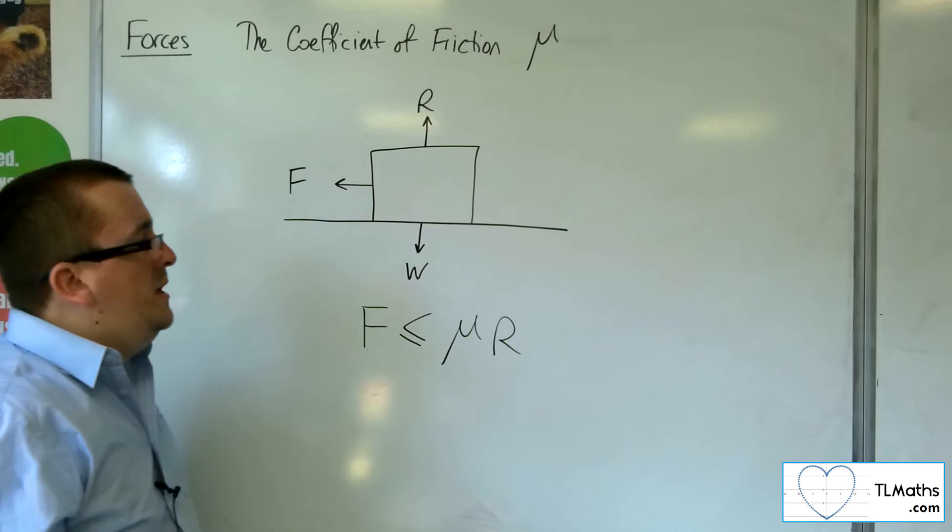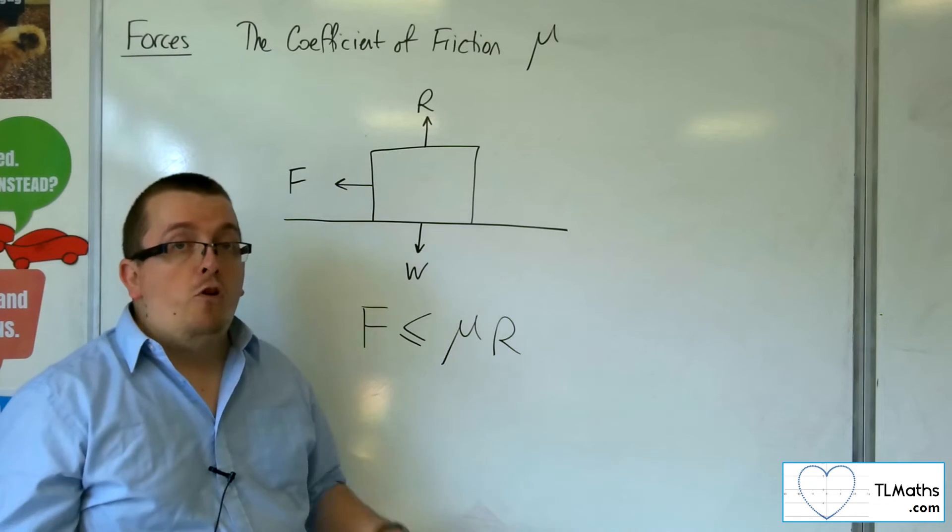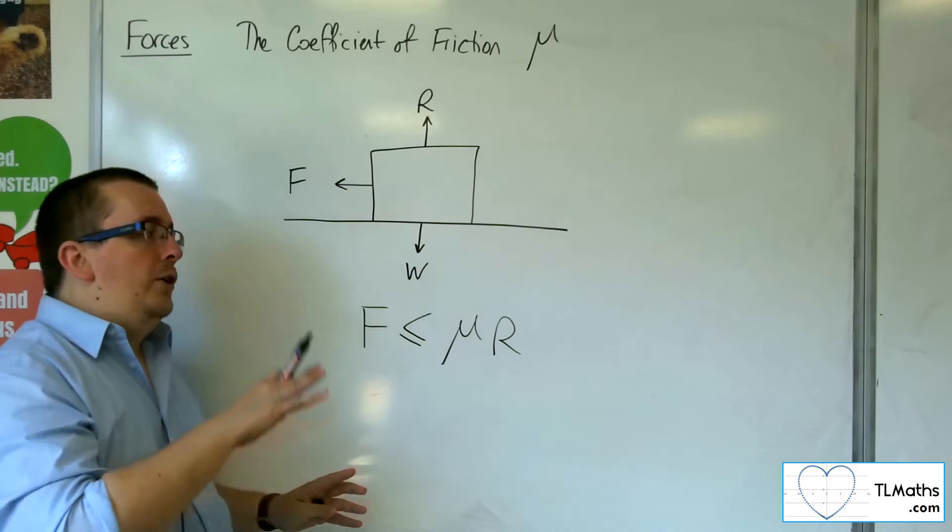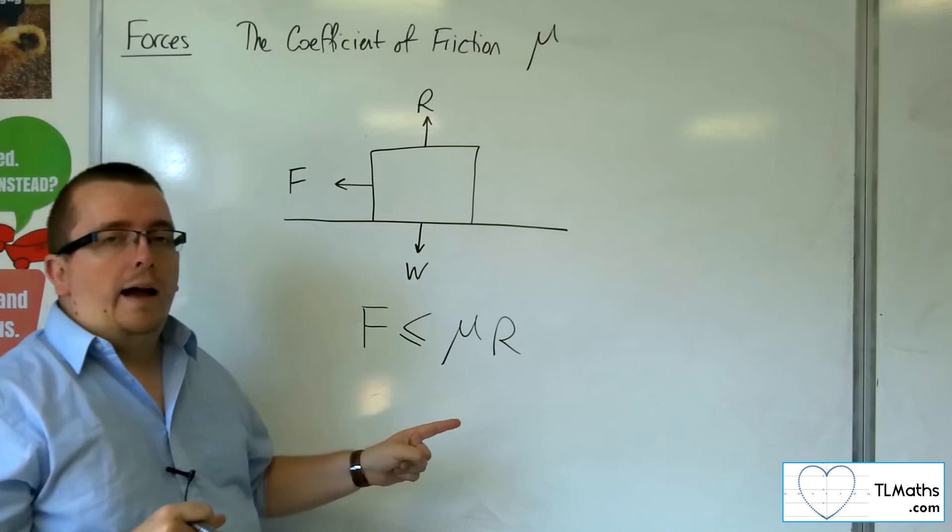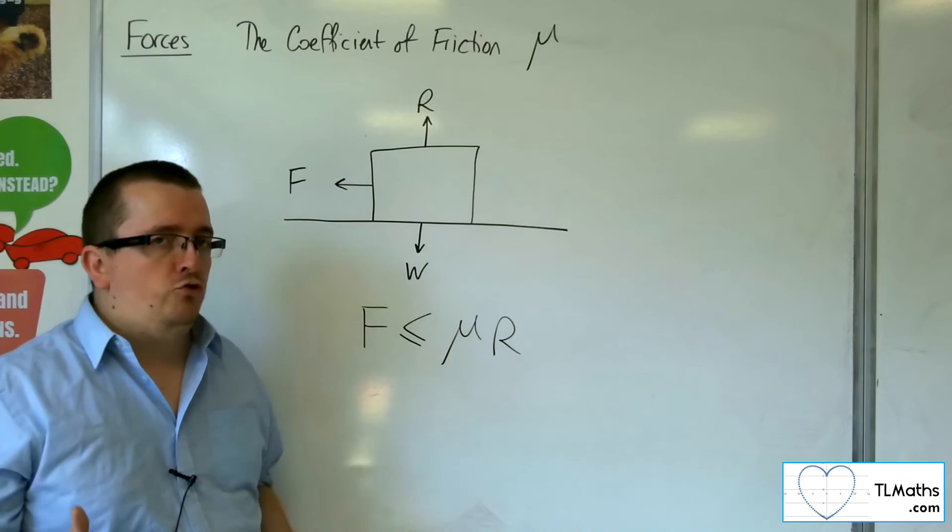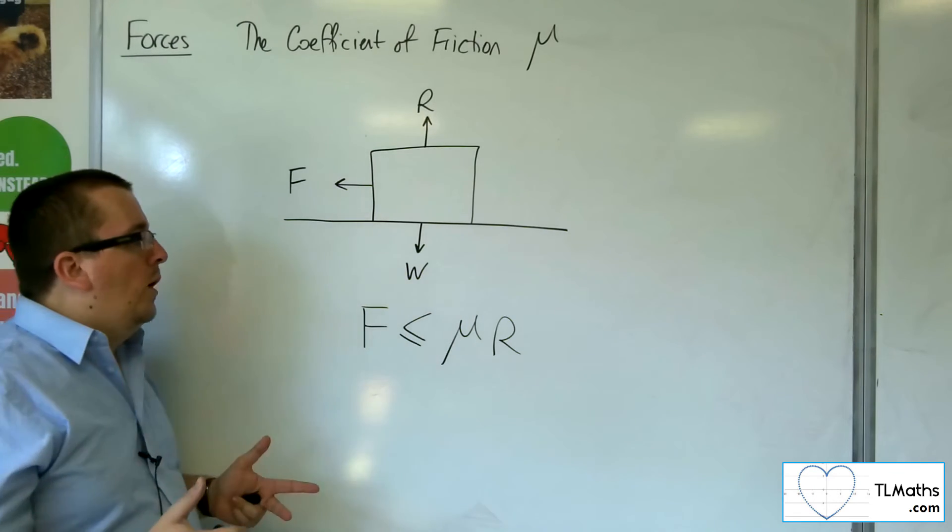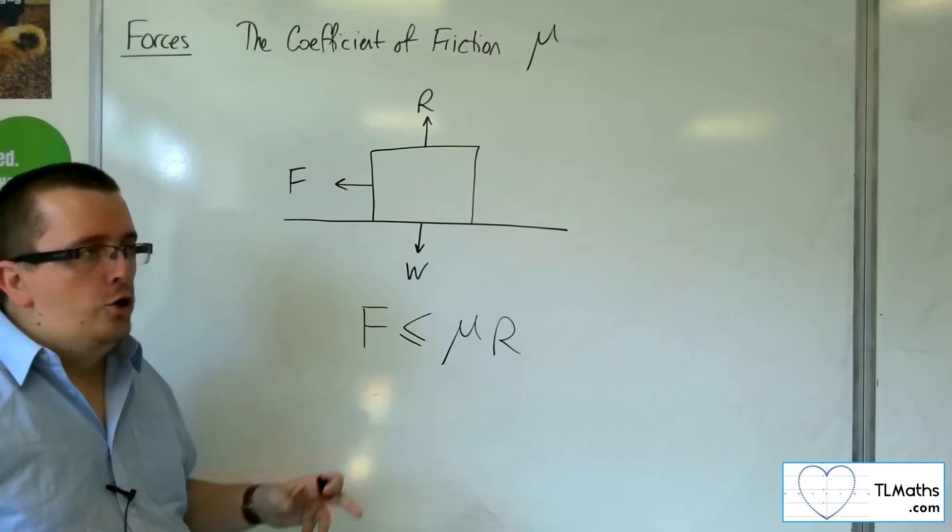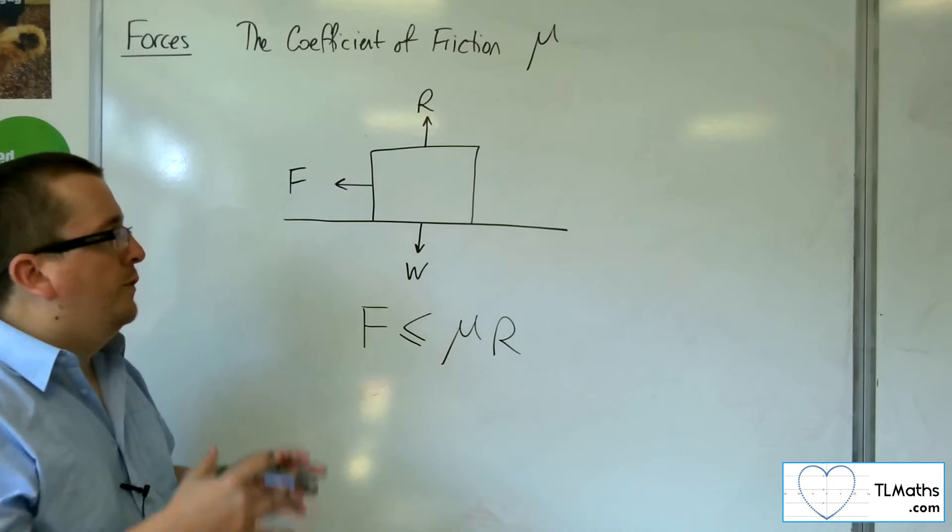In a lot of cases, μ is between 0 and 1. However, there are materials where μ can be greater than 1. It's not restricted to going up to 1. You can look on engineering tables or Google coefficient of frictions for different surfaces to see what has been found.